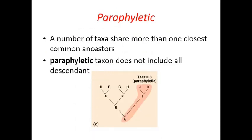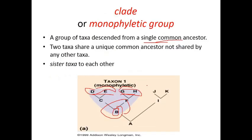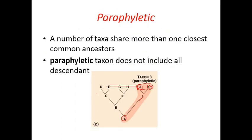Monophyletic group ya phir clade — ye branching tree hai to us tree ki branching pattern ke hisaab se type hota hai. Doosra hai paraphyletic. Paraphyletic mein koi aisa multiple branching nahi hai — jaise j and k — jo ek hi hai lekin a se start hua. Paraphyletic does not include all the descendants. J and k ek doosre ke ekdam nazdik hain, so this group is called paraphyletic, whereas d, e, g, h with multiple branching from b is called monophyletic.